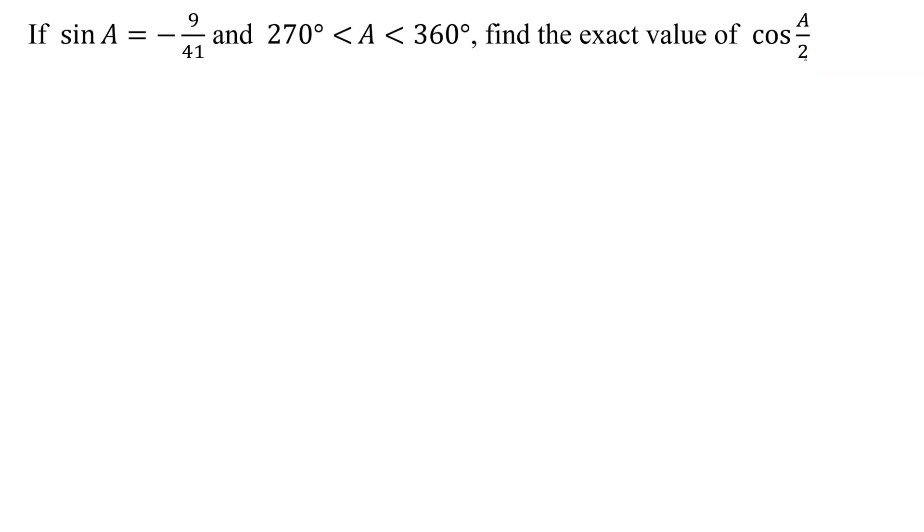I'm going to need a half angle identity for the cosine function. So here it is, the cosine of A over 2 equals plus or minus the square root of 1 plus cosine A all divided by 2.